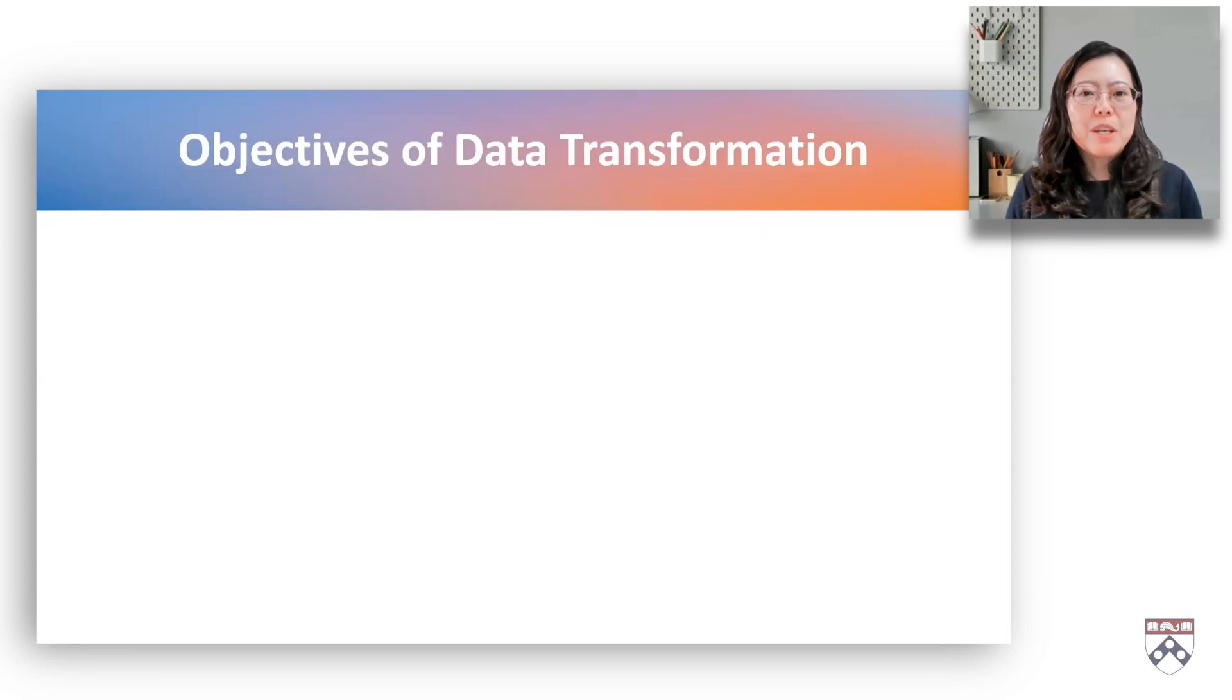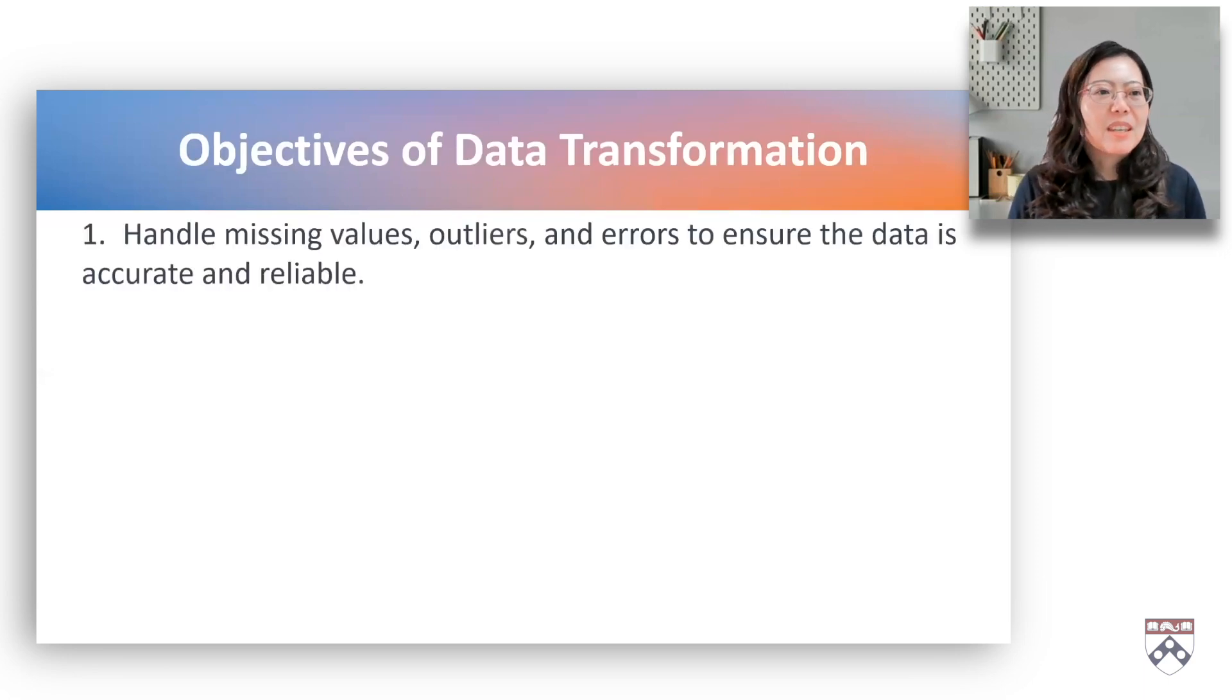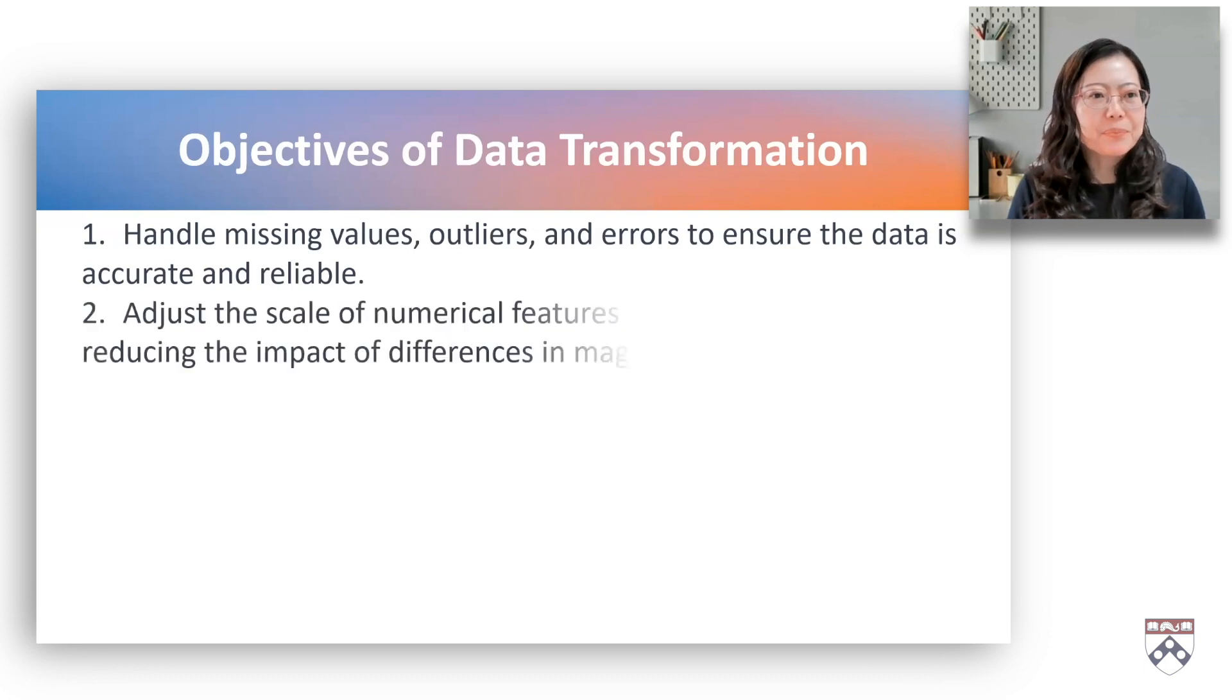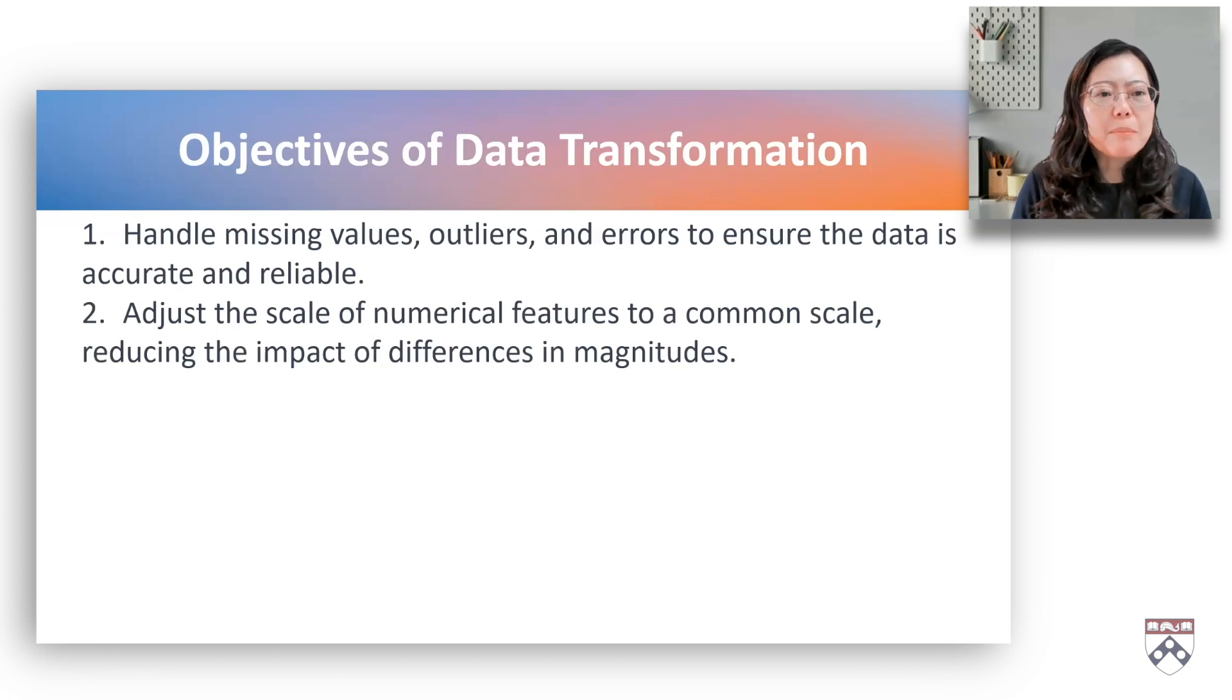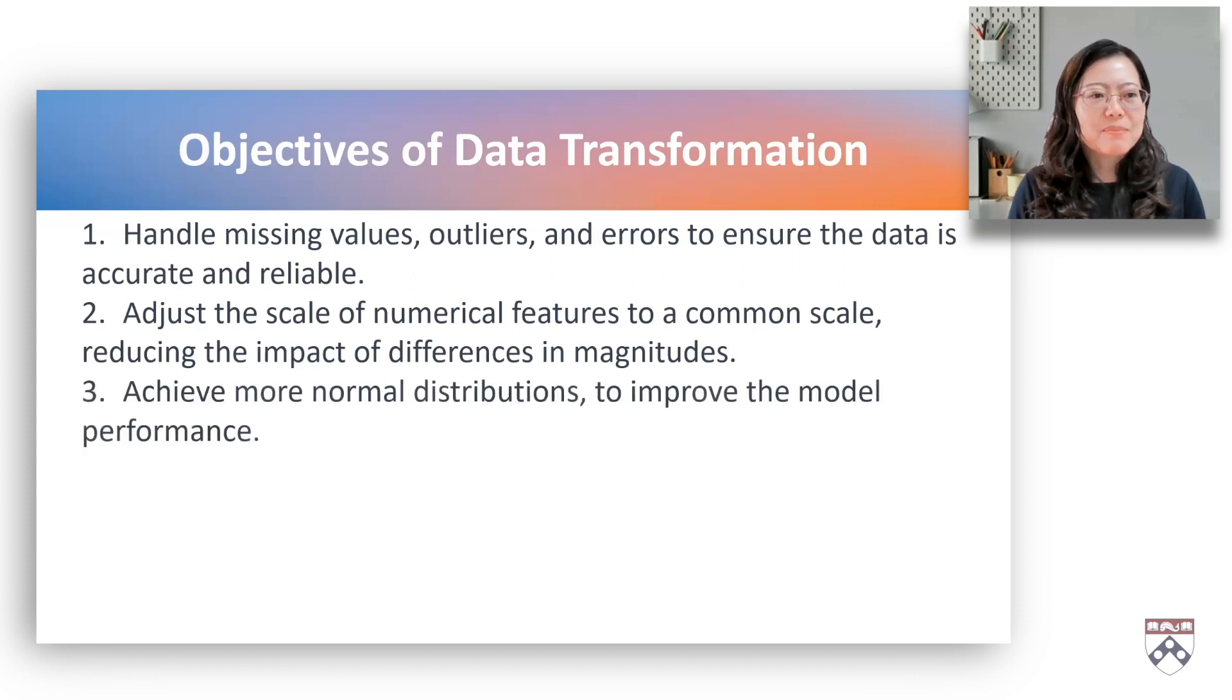Data transformation is a crucial step in the data science process. Data scientists often need to perform it to achieve the following five objectives: handle missing values, outliers, and errors to ensure that data is accurate and reliable; adjust the scale of numerical features to a common scale, reducing the impact of differences in magnitudes; achieve more normal distributions to improve the model performance.